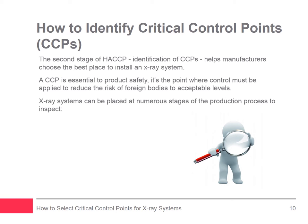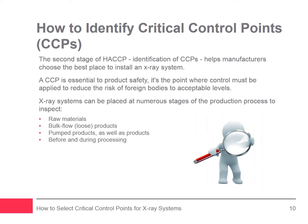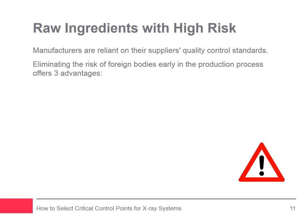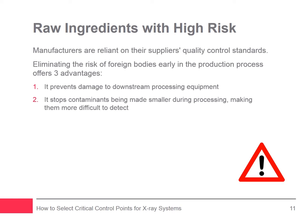X-ray inspection will be most effective at detecting foreign bodies at the following stages of the production line: inspecting raw materials, bulk flow, loose products, pumped products, products before and during processing, after processing, before packaging and sealing, after packaging and sealing, and final cases. Raw ingredients come with a high risk of foreign bodies, and manufacturers are reliant on the quality control standards of their suppliers. Some manufacturers insist that their suppliers have x-ray systems installed. An undetected stone or shard of metal can cause damage to downstream processing equipment or be made smaller, making detection more difficult. Early detection keeps costs down by eliminating contaminants before value is added through processing and packaging.